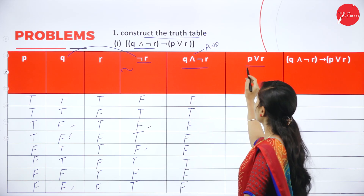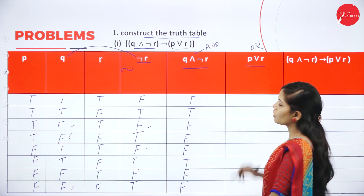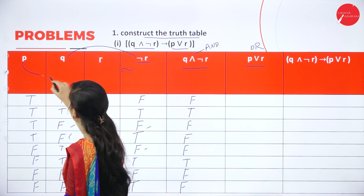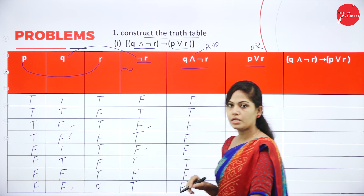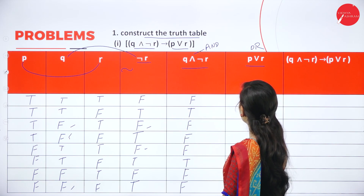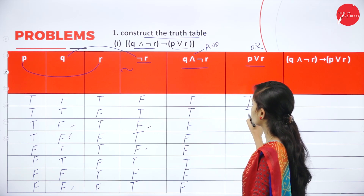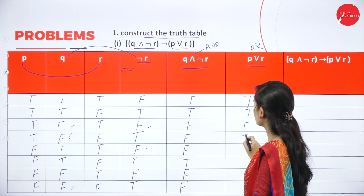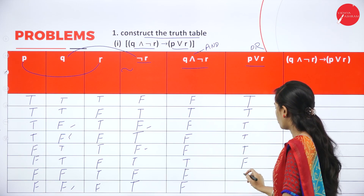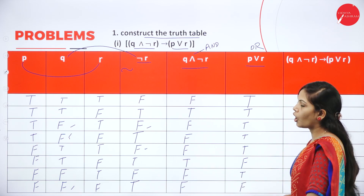Next, find P ∨ R. Consider the P column and R column with the OR operation. In OR operation, if any one of the conditions is true, the statement is also true. So: true OR true = true, true OR false = true, false OR true = true, false OR false = false.